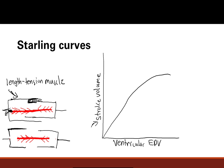If you stretch out that heart muscle a little bit — increase length — because there's more blood stretching out that ventricle, then the thin filaments have a lot more space between the thick filament and the Z line. When you do that power stroke, you're going to get a lot more tension. This key concept is reflected in the Starling curve, which shows that as end-diastolic volume increases, your stroke volume will increase as well.